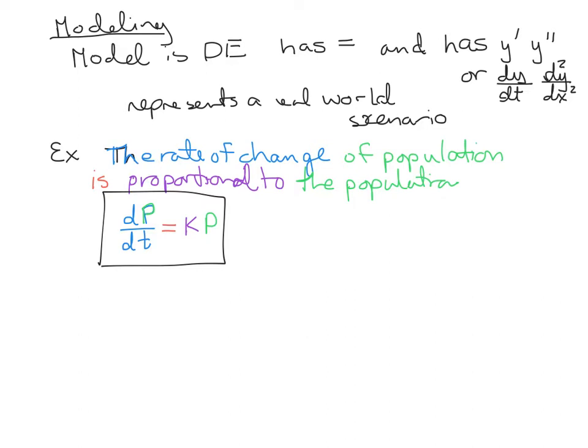And so this would be our differential equation, this would be our model right here. It's got a derivative in it, it's got an equal sign, and it represents some sort of real-world scenario. In fact, human population is modeled by this population growth, and I'm guessing you've seen this before. This is exponential growth. We'll actually solve this and get an exponential function out of it for population.